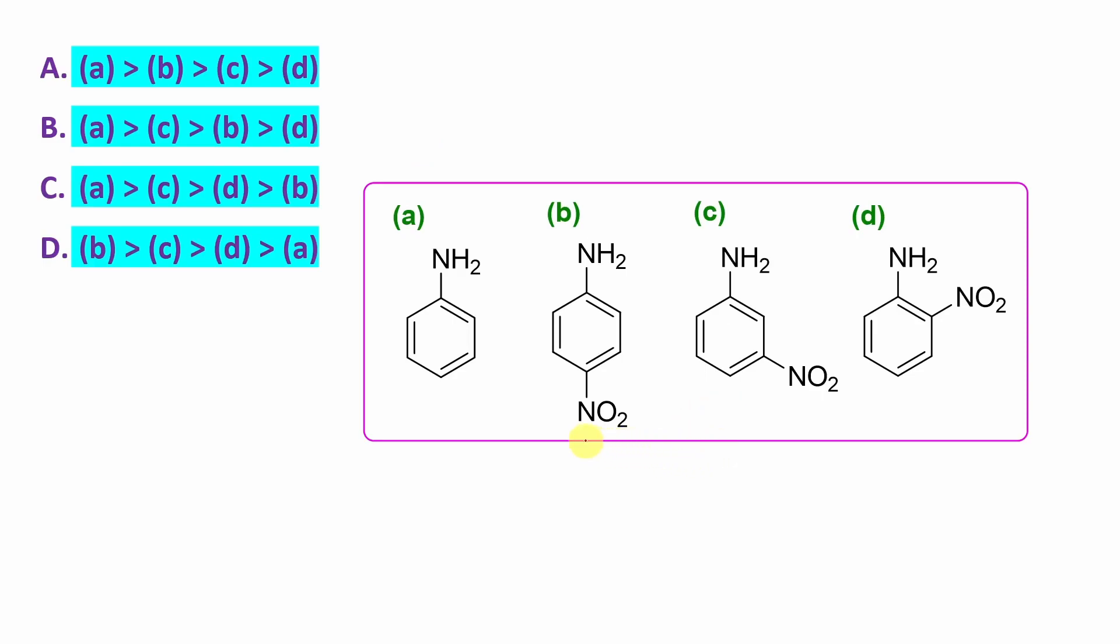Now question, what are the others? If you look at here, this nitro is in para, meta, and ortho. Now when nitro is in ortho position, it shows both minus I and minus R. So both will be operational here. We know minus I effect operates through sigma bond. And this carbon and this carbon are closer, and this NH2. So consequently, this withdrawing effect through sigma bond minus I will be efficient here. So you can say this is a minimum basic.